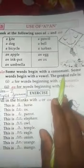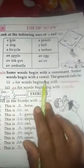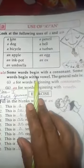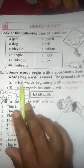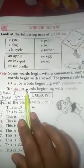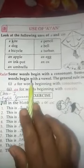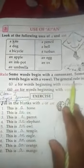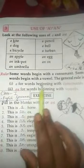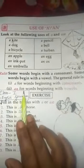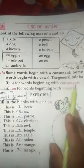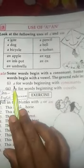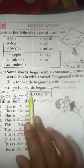So rule: some words begin with a consonant and some words begin with a vowel. The general rule is a for words beginning with consonants and an for words beginning with vowels. Words that start with consonants use a, and words that start with vowels use an.